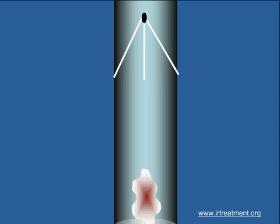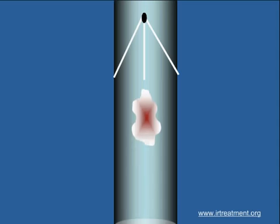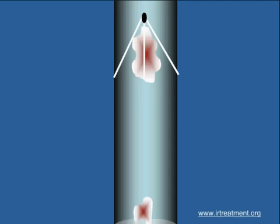Pulmonary embolism can be prevented once DVT has developed by placing an umbrella-like device called the IVC filter.